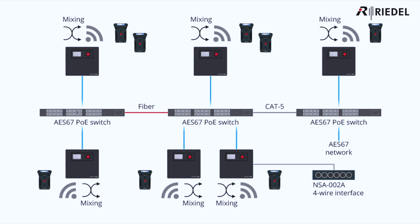In both standalone modes, you use an integrated web browser for configuration, and the system will support 12 party lines, 100 belt packs, and 100 antennas. You can also add an NSA-002A interface for added 4-wire and GPIO connectivity.